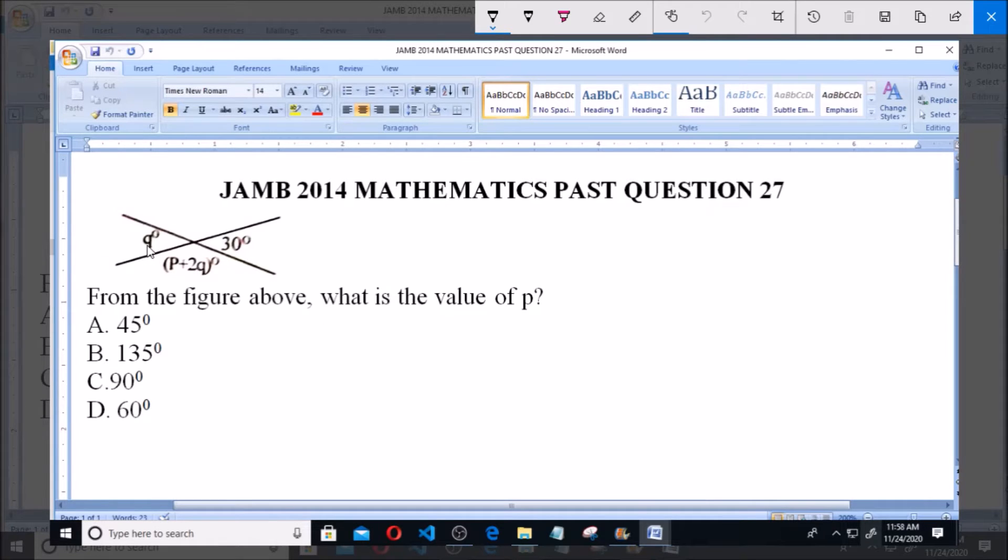Now to find the value of p, we have to know the value of q. Looking at this, q is alternate to this angle 30°, so definitely q is equal to 30° because they are alternate angles.